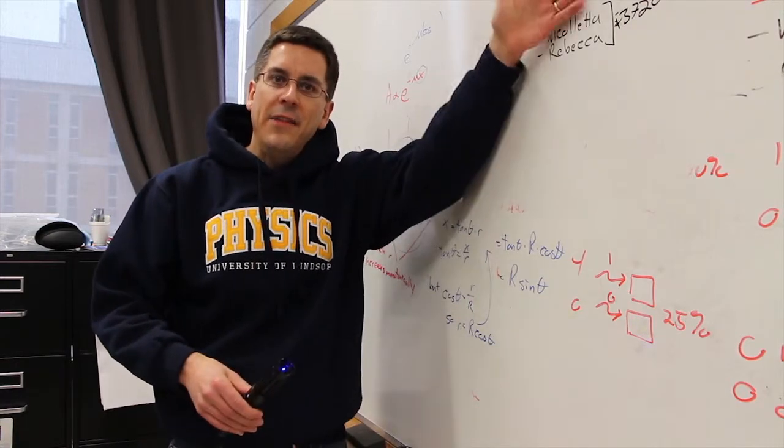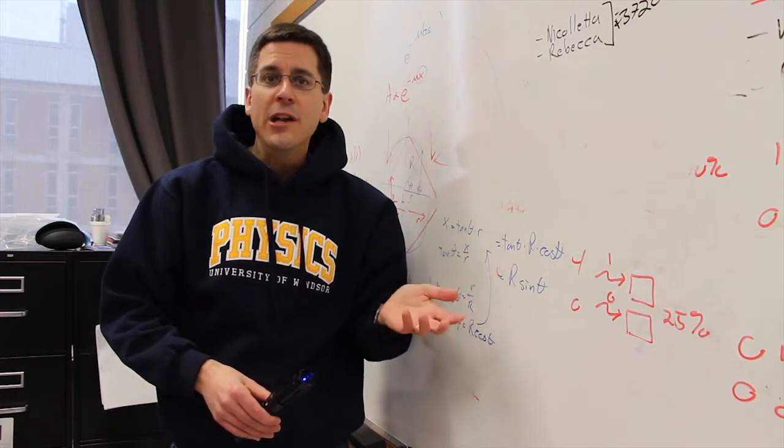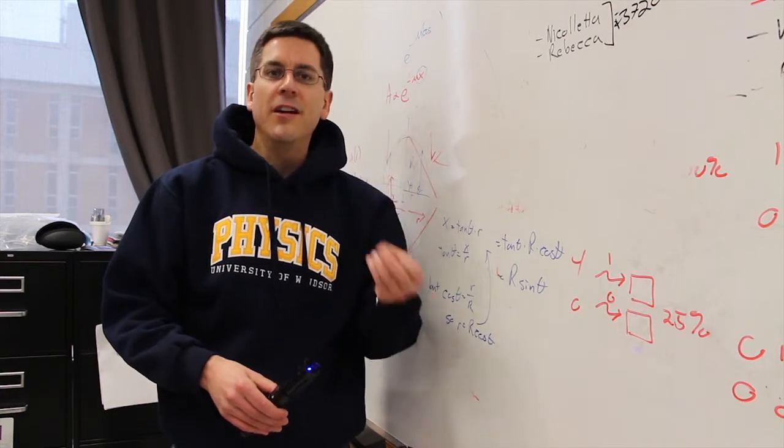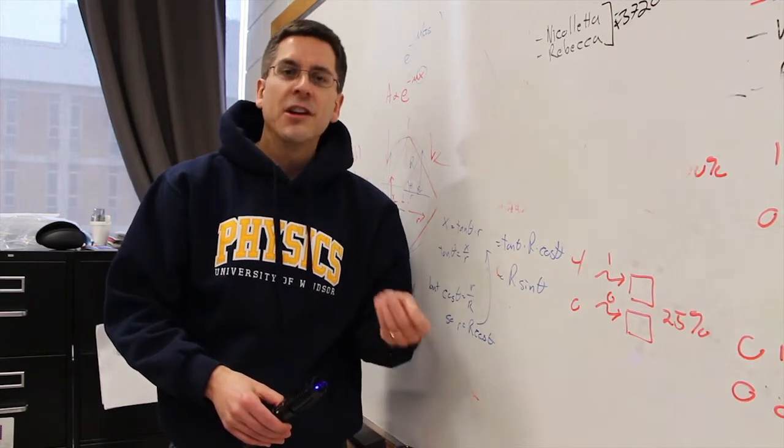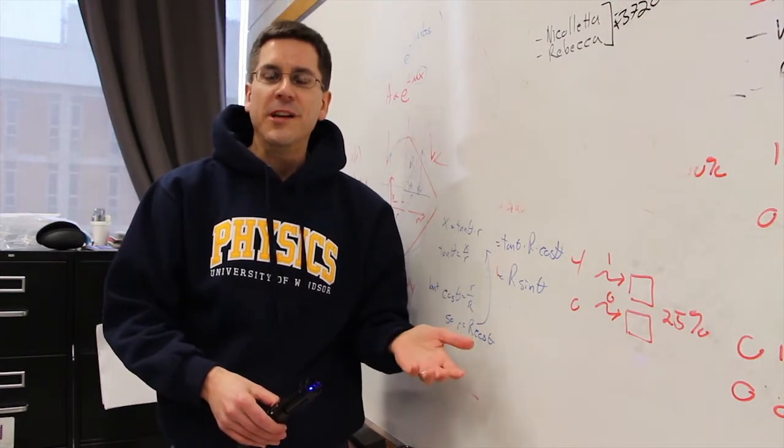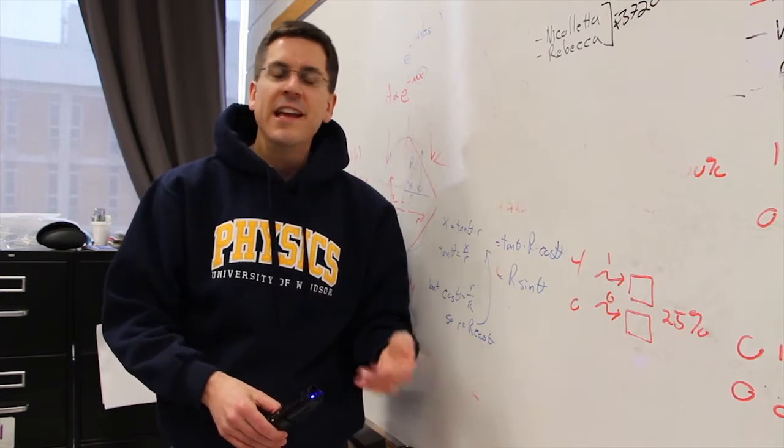One, light will never stop at the end of a sword. One thing we know about light that is an immutable law of physics is that light must travel at the speed of light, 300,000 kilometers per second. It cannot stop.